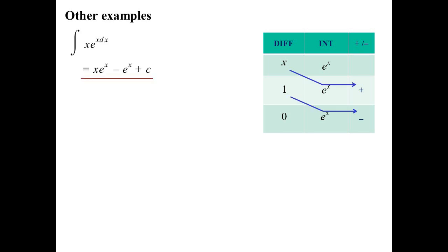So some other ones. X e to the X. Somehow the dx has ended up in the power. It's not meant to be in the power. Okay. X e to the X. So X down until it gets to zero. The other one's e to the X. So tic-tac-toe. Tic-tac-toe. There's my answer.